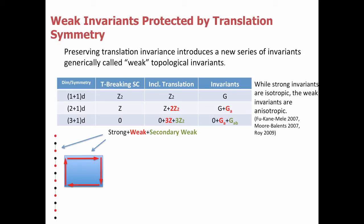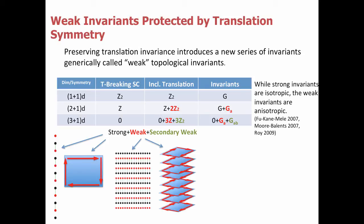Looking at the different examples: the strong examples are like the P-wave wire or the Chern insulator. We can stack these up to get primary weak invariants — stacking wires gives a two-dimensional weak state, or stacking planes gives a three-dimensional weak state, which is a primary state. Or we can stack wires to get a three-dimensional state, which is the secondary weak invariant. This summarizes our understanding of these weak topological phases.